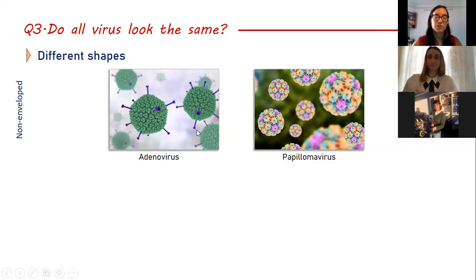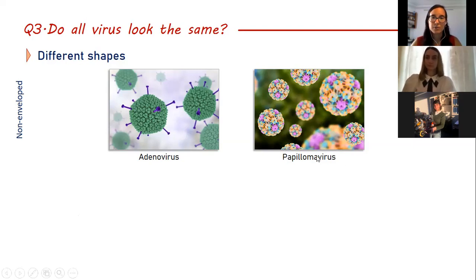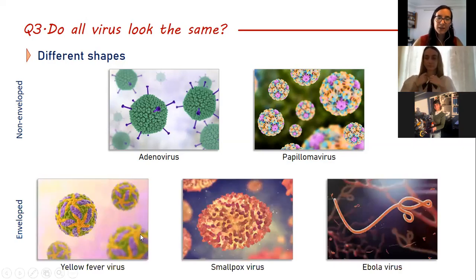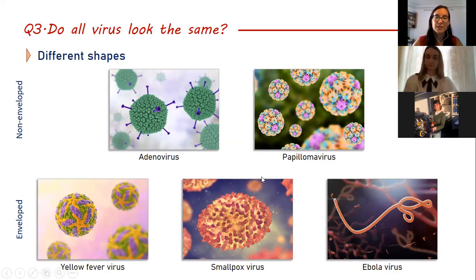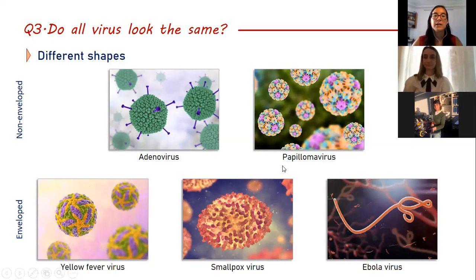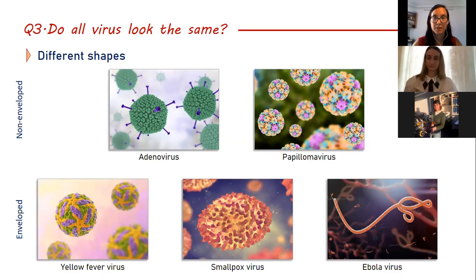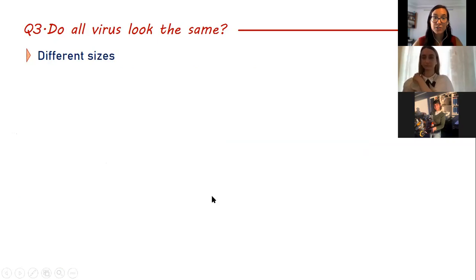Here are two examples of non-enveloped viruses that are extremely common: adenovirus and papillomavirus. Adenovirus tends to cause common cold, and papillomavirus tends to cause skin infections. And there are envelope viruses, like yellow fever virus, smallpox virus, or Ebola virus, that look quite different. Papillomavirus might actually look more like yellow fever virus, which is a completely different type of virus. Or Ebola virus looks like none of the others. So there's a huge amount of different shapes that viruses can take.